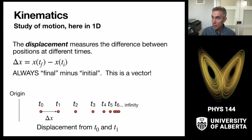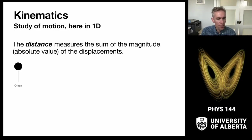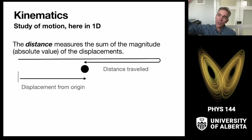We'll do displacement later in two and three dimensions, but for now this is what we mean by displacement. We'll also sometimes talk about the distance, which represents the sum of the magnitudes of a bunch of small displacements — the total path the particle travels. If a particle swings out to the right and comes back to the left, the full path trajectory is the distance traveled, while the displacement is measured from zero to wherever the particle is now. Displacement can grow and shrink, but distance is always increasing or staying the same.